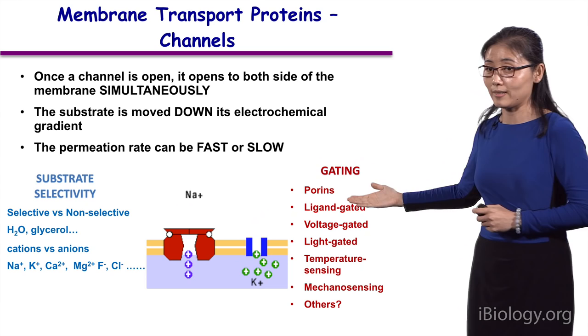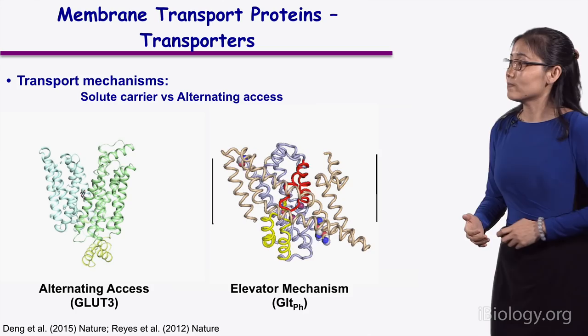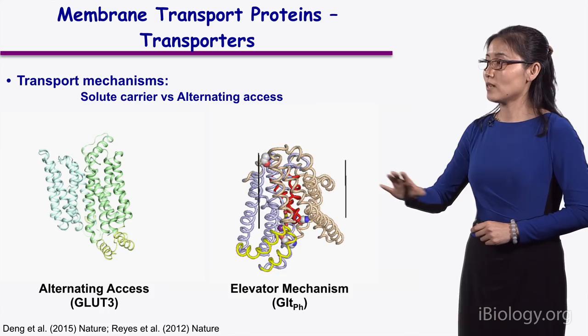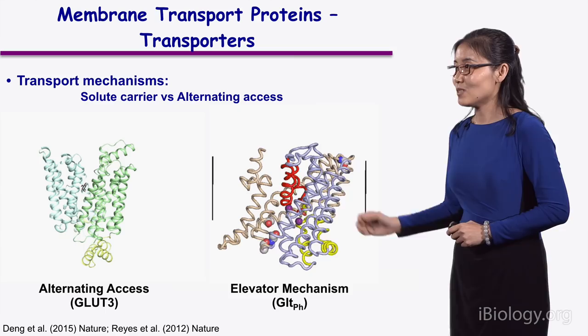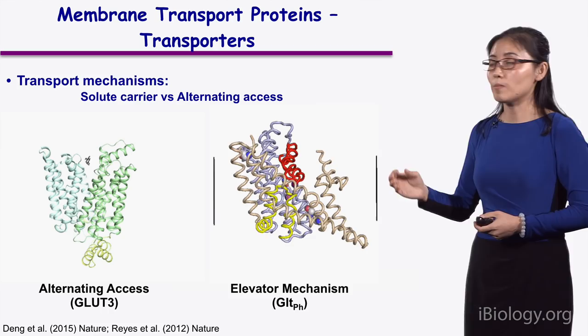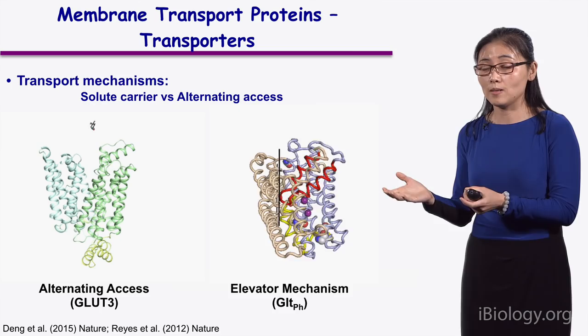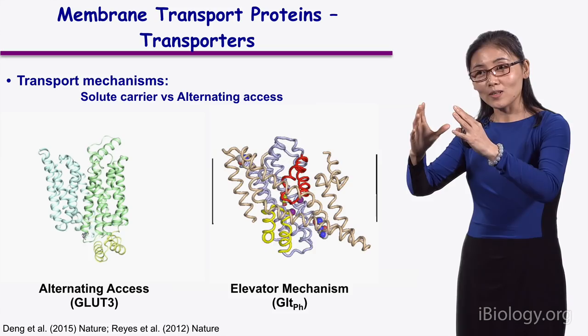We can classify channels based on their substrate selectivity or gating mechanism. We can also classify them based on their cellular localization — either plasma membrane channels or intracellular channels. Now let's talk about transporters. Shown here are two general mechanisms of transporters: one is the alternating access, and the other is the so-called elevator mechanism. In history, a transporter was originally proposed to translocate the substrate through a so-called mobile carrier mechanism. In the 1950s, Widdas proposed this mobile carrier mechanism, according to which a transporter may function like a carrier, or a little boat — it uploads the substrate from one side of the membrane, then swims across to release the substrate on the other side.